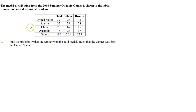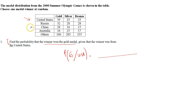Here's a trick for table-based questions. A table shows medal distribution from the 2000 Summer Olympic Games. The question asks: find the probability that the winner won a gold medal, given that the winner was from the United States of America. What is the best way to solve this without writing the full formula?